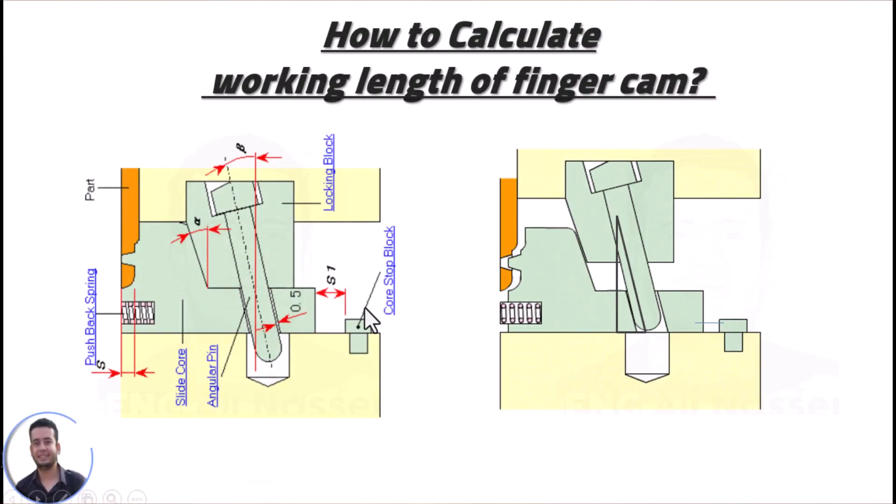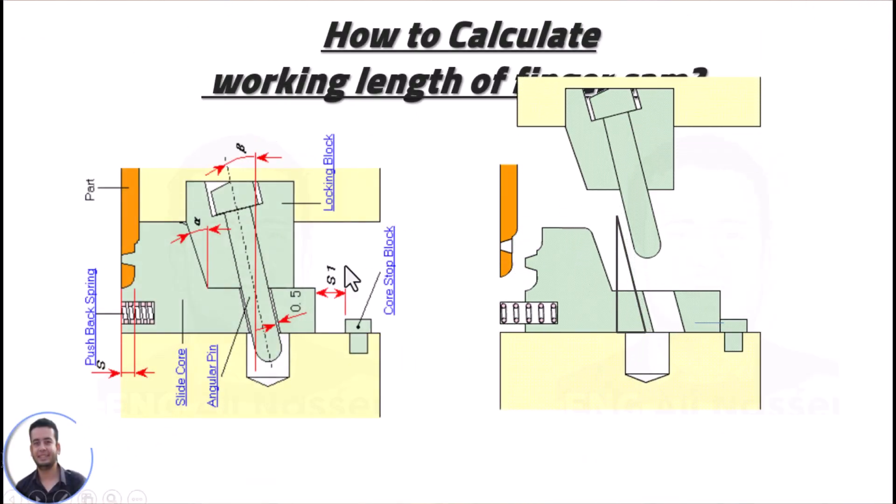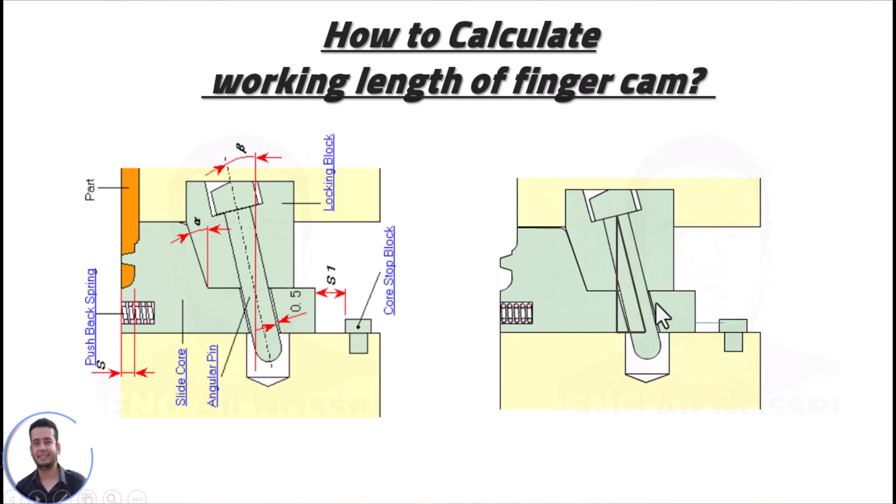Here we have some parameters to calculate the working length of finger cam. The angle of the slide cam is between 10 to 25 degrees as we said, and the locking block angle must be greater than this angle to exclude lap or interference.